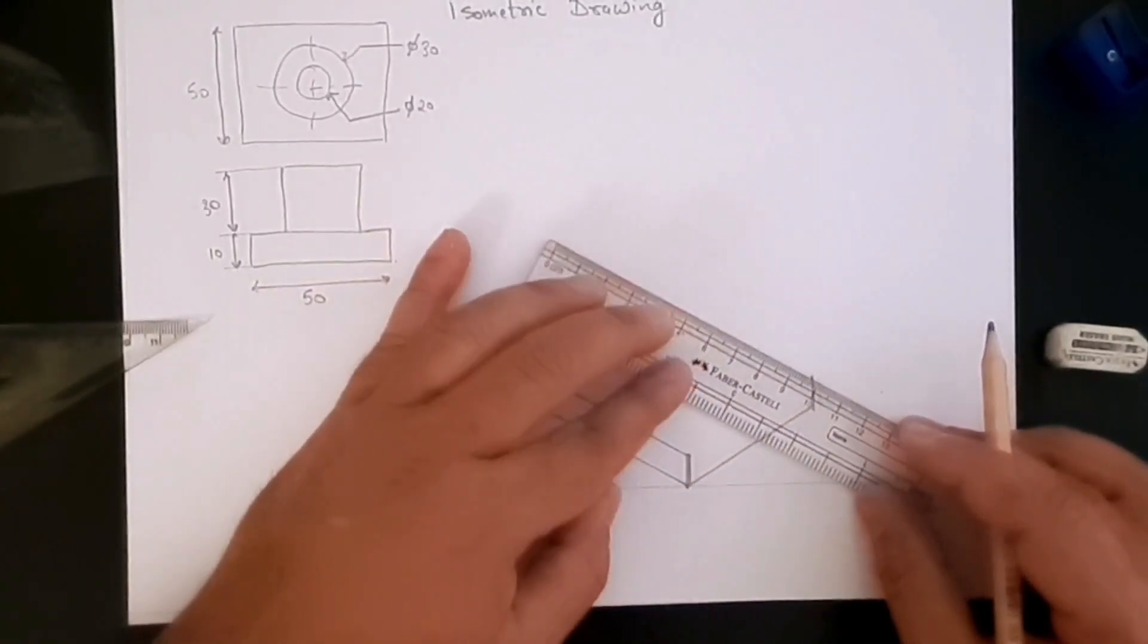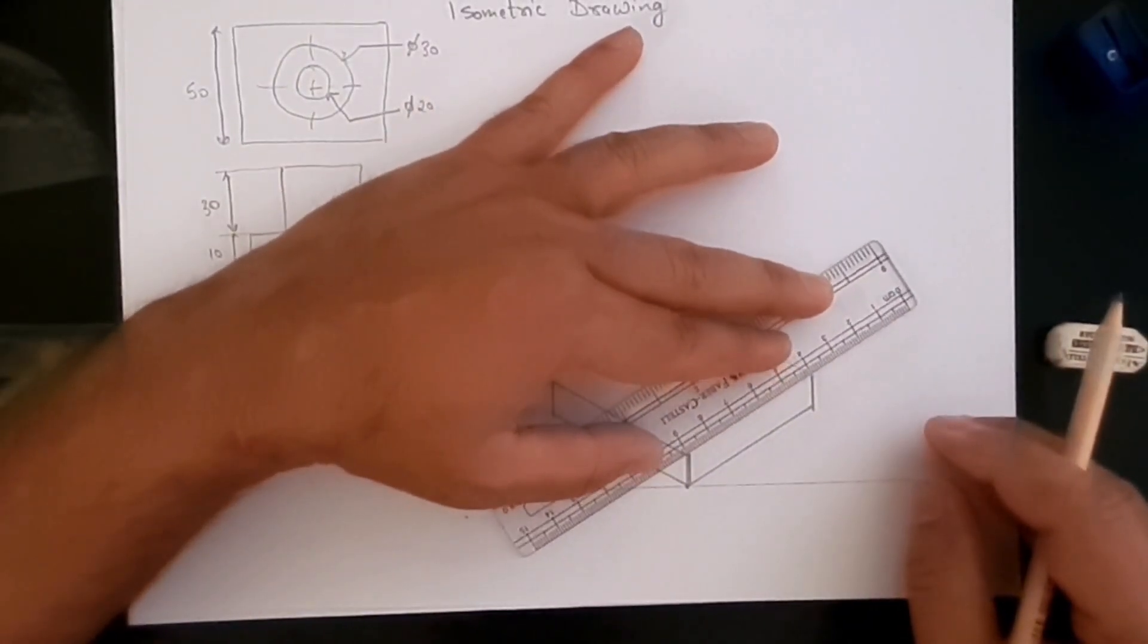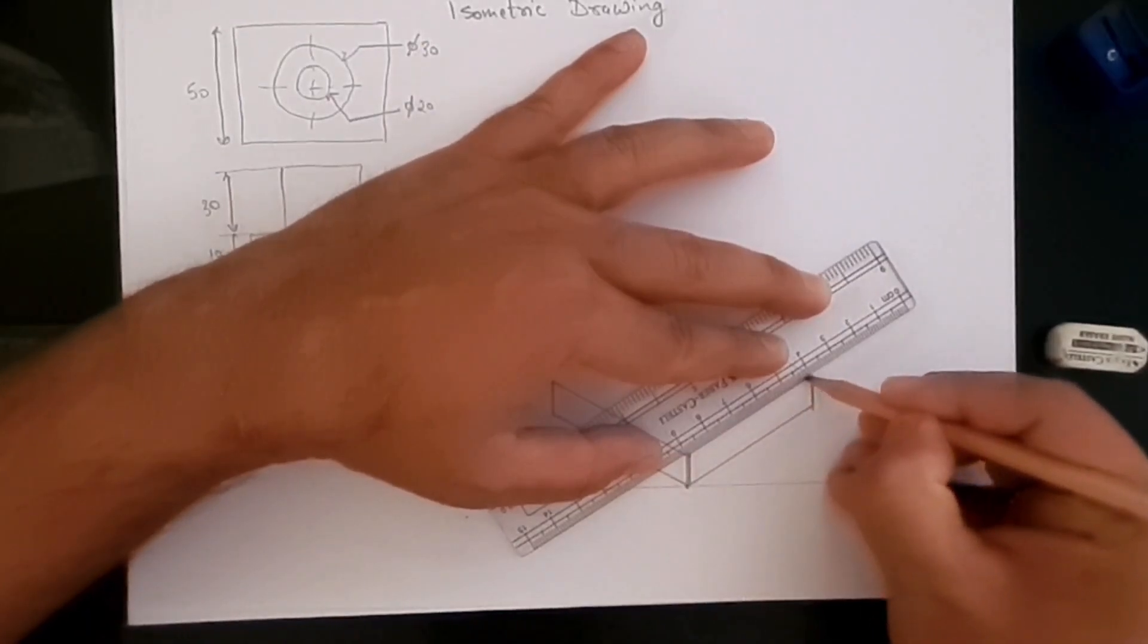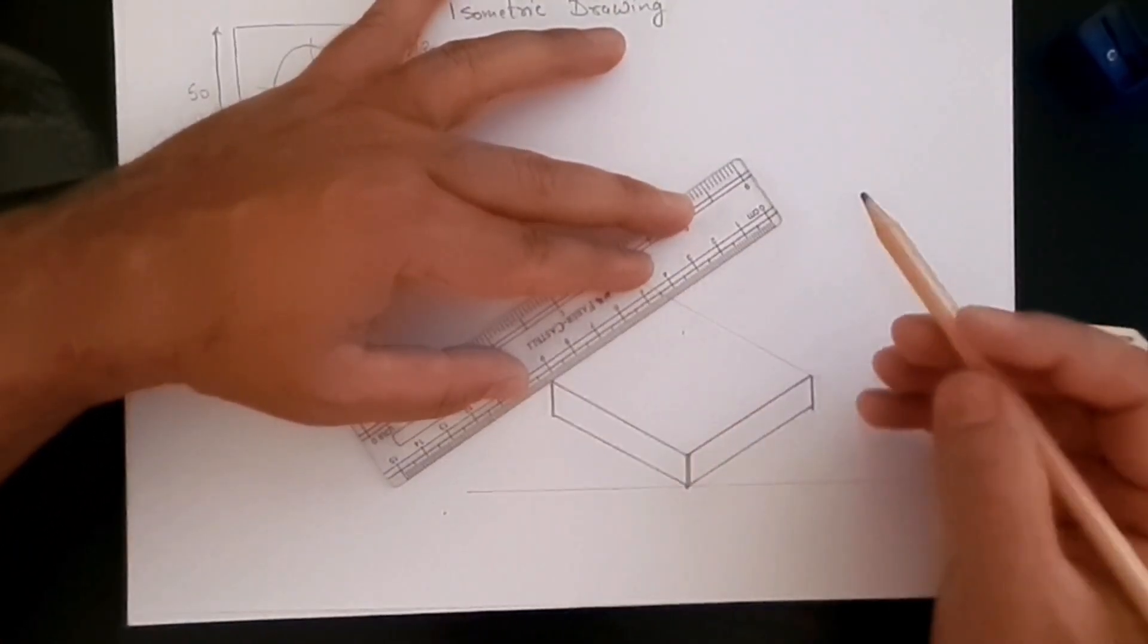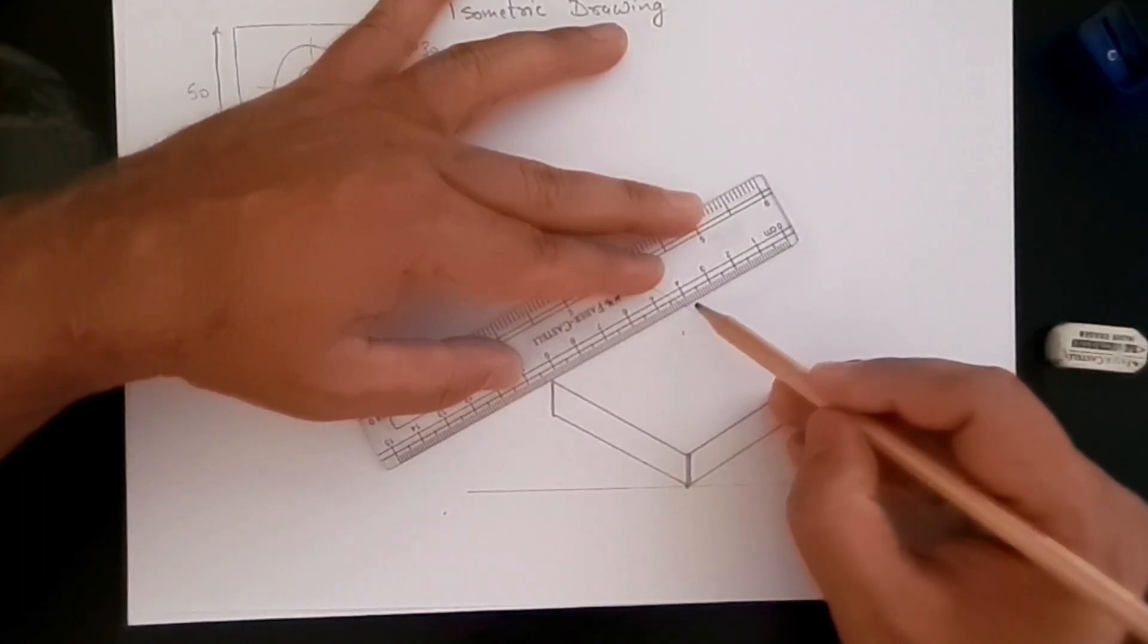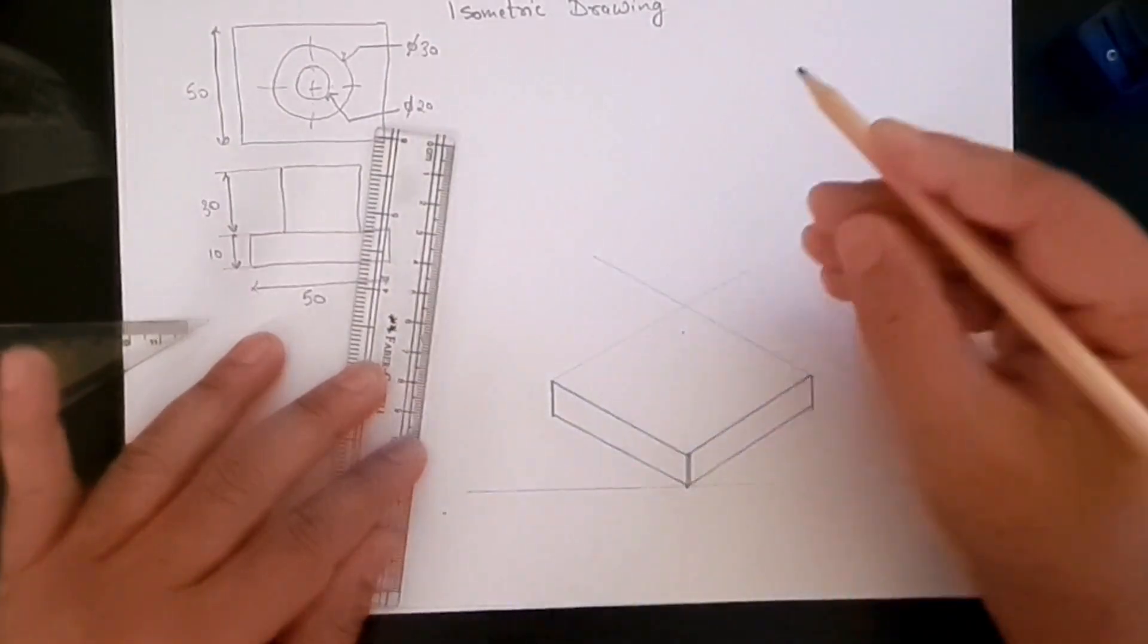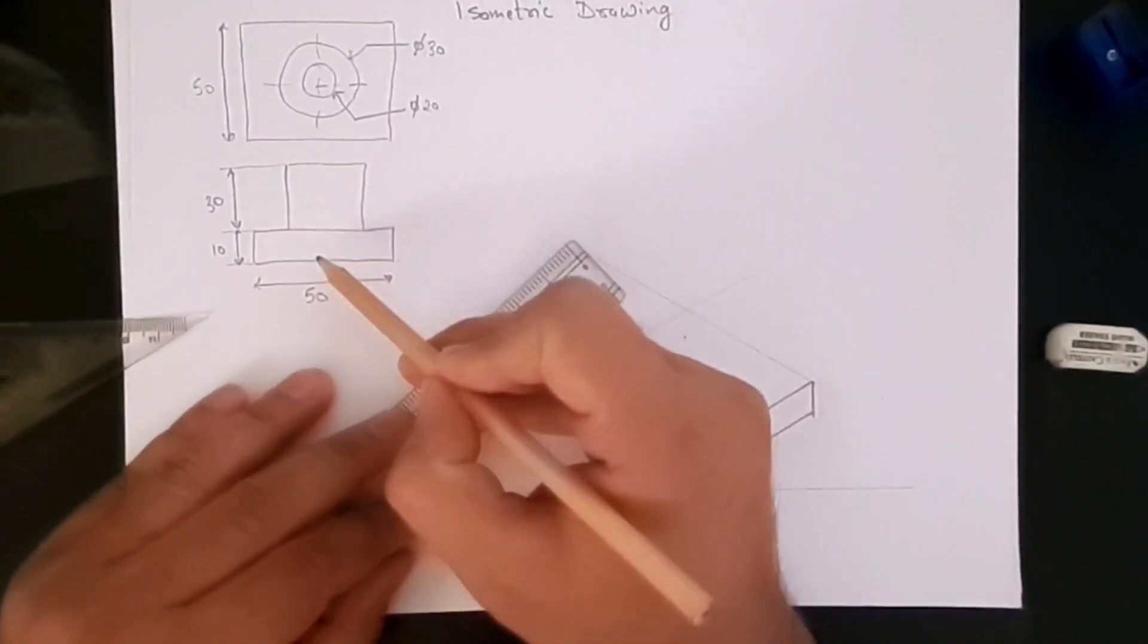And here I'm just creating a reference line to build off for later. Now this technique that we're using is also called the box technique. So what we are essentially doing here is we're creating a box.